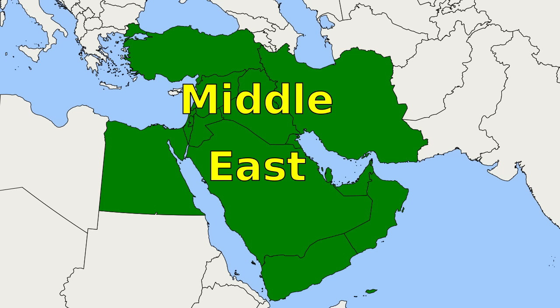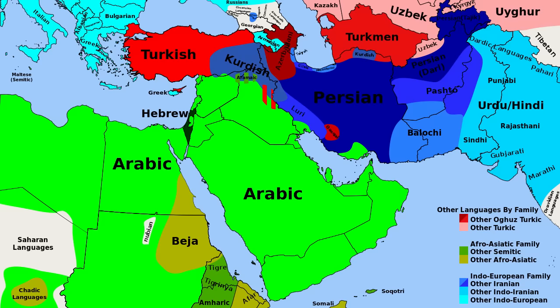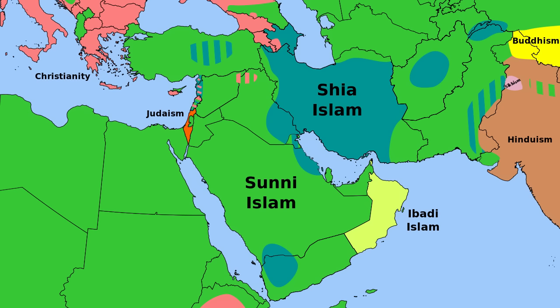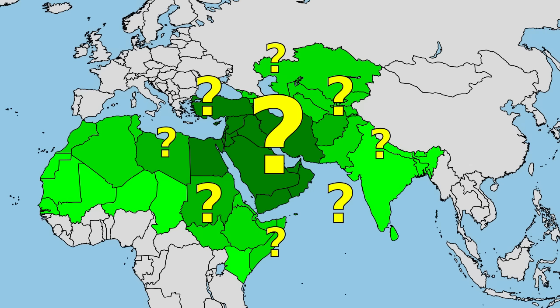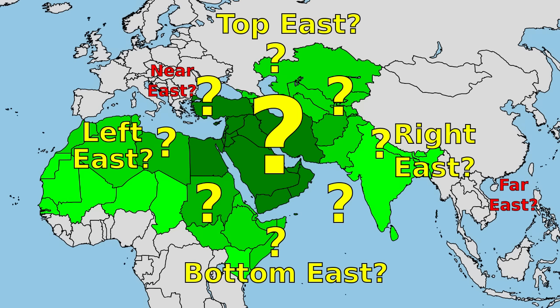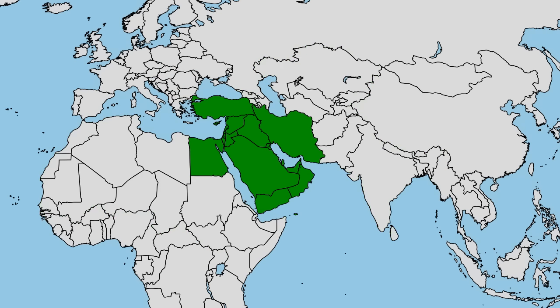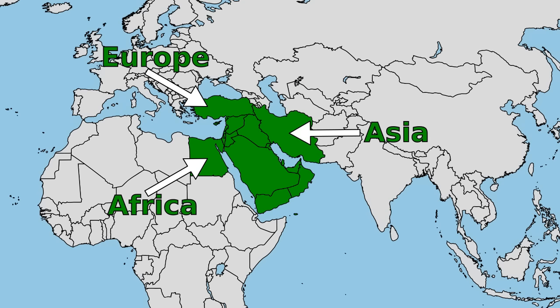This video is going to summarize the main languages, religions, and ethnic groups of the Middle East and briefly explain some of the minority ethnic groups. Where the Middle East exactly is and why it has that name could be its own video, but for the purposes of this video, the Middle East is a region at the crossroads of Europe, Asia, and Africa.